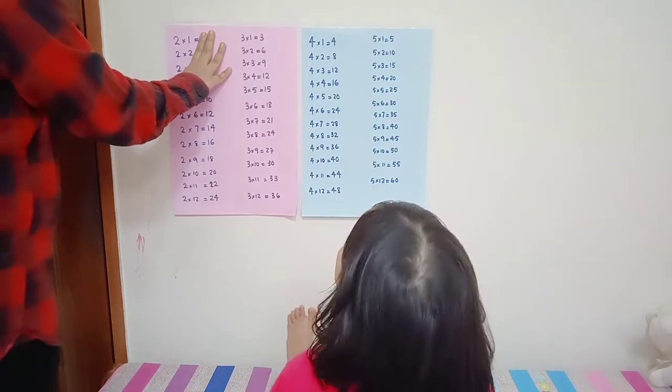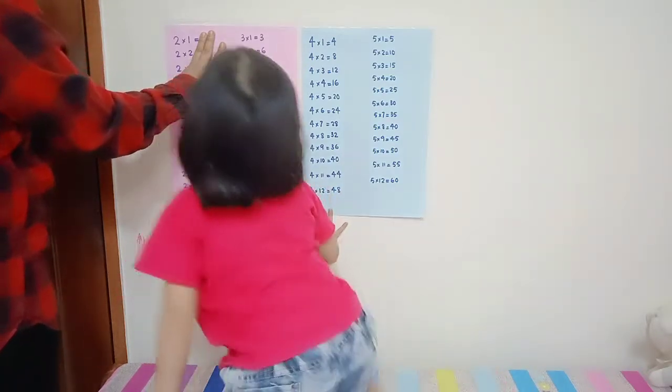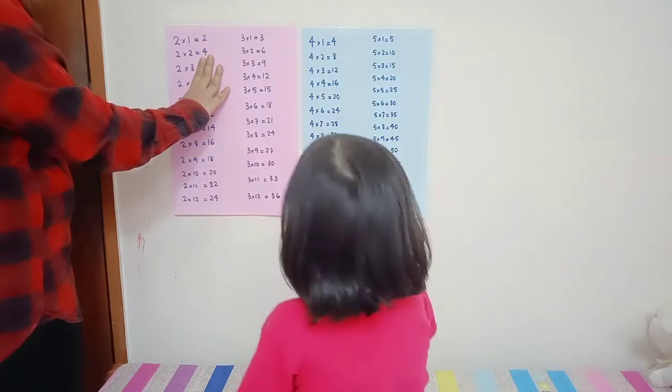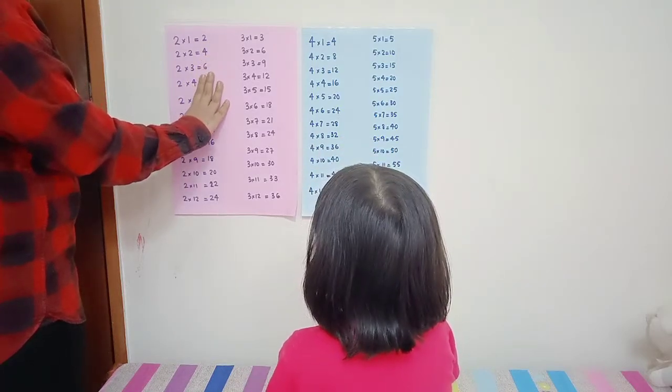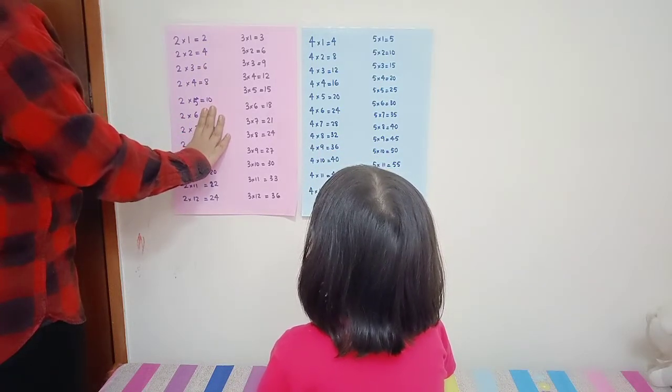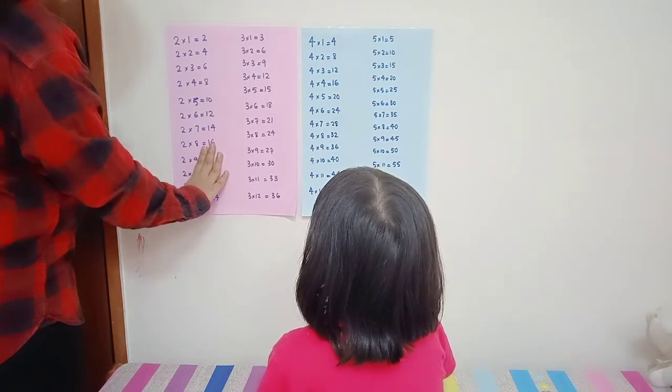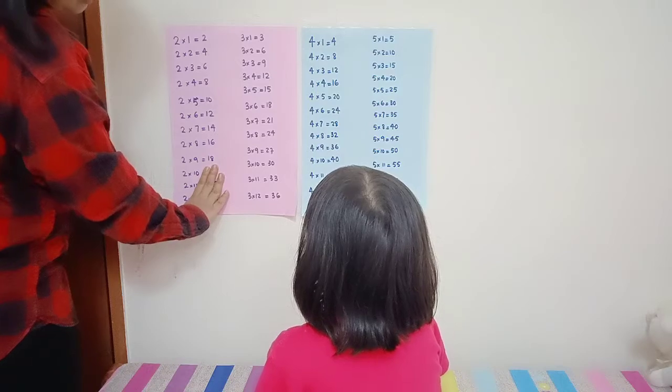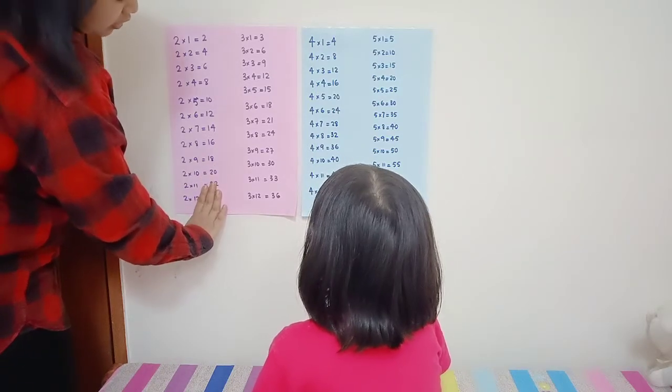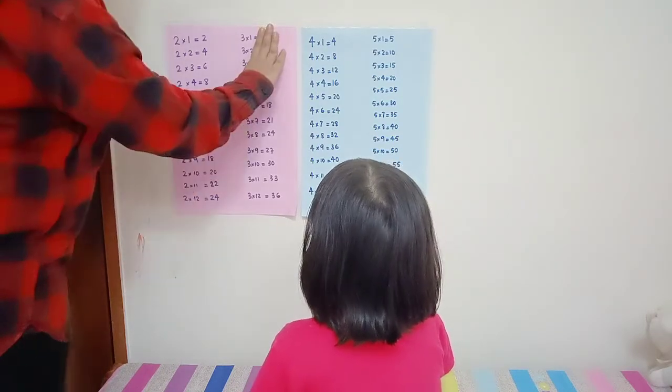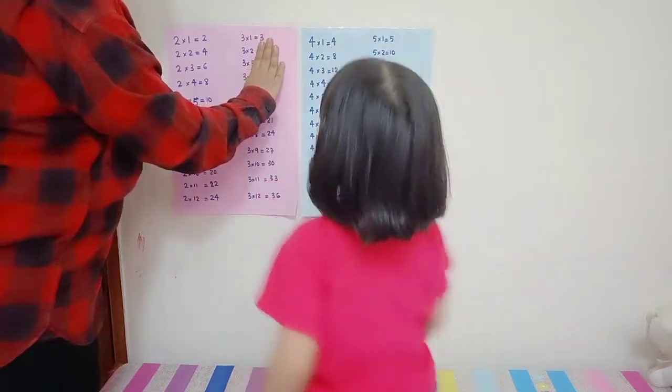I can't. I'll look for the video later. Two times one two, two times two four, two times three six, two times four eight, two times five ten, two times six twelve, two times seven fourteen, two times eight sixteen, two times nine eighteen, two times ten twenty, two times eleven twenty-two, two times twelve twenty-four. Three times one three, three times two...